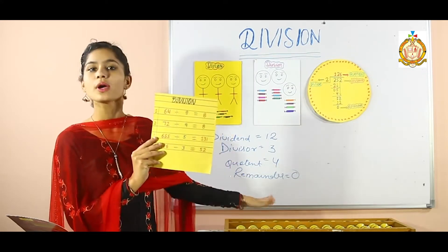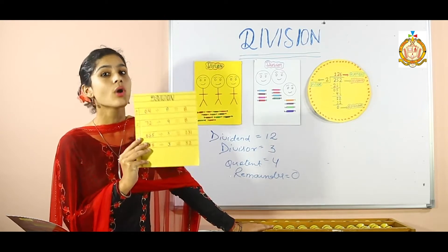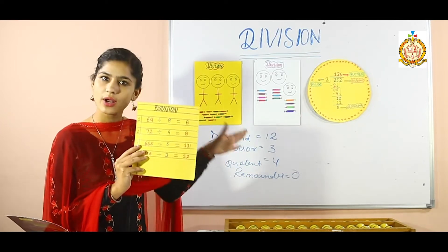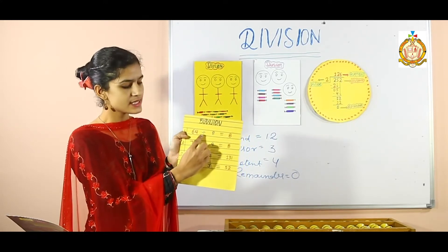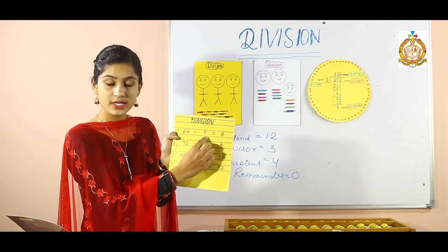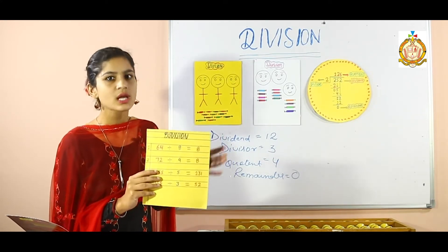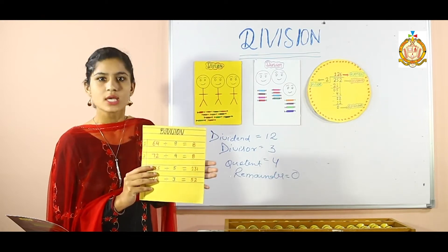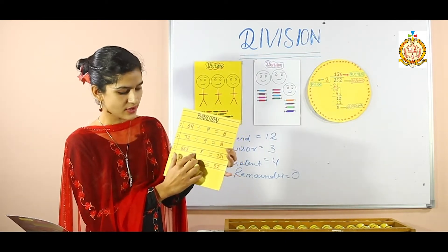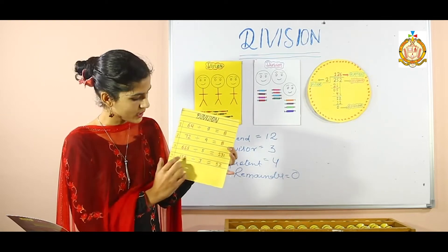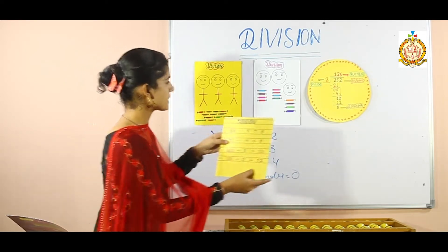We will solve these examples with the help of an abacus. This is your abacus class. I will tell you how you can solve division on an abacus scale. We have 4 problems to solve: 64 divided by 8 equals 8; 72 divided by 9 equals 8; 655 divided by 5 equals 131; and 156 divided by 3 equals 52. I am going to paste this chart here.